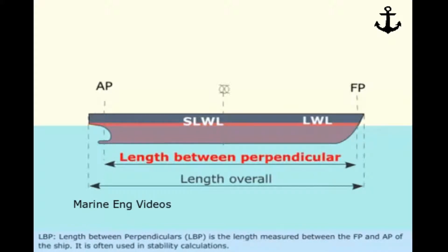L.B.P. — Length Between Perpendiculars. L.B.P. is the length measured between the F.P. and A.P. of the ship. It is often used in stability calculations.